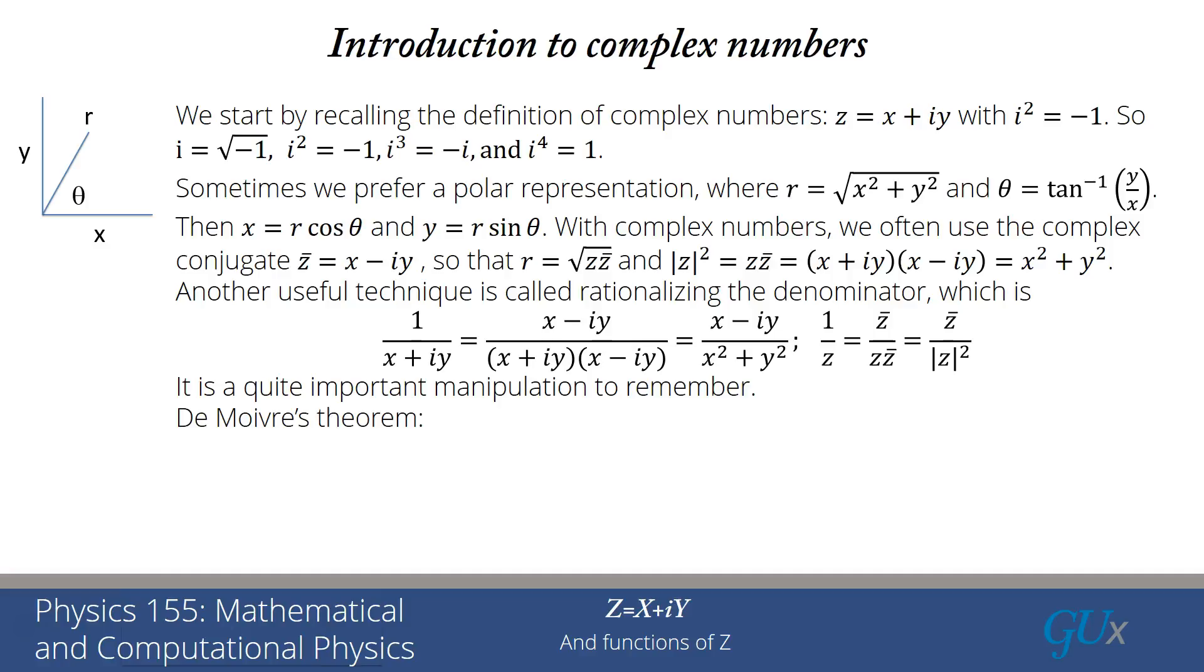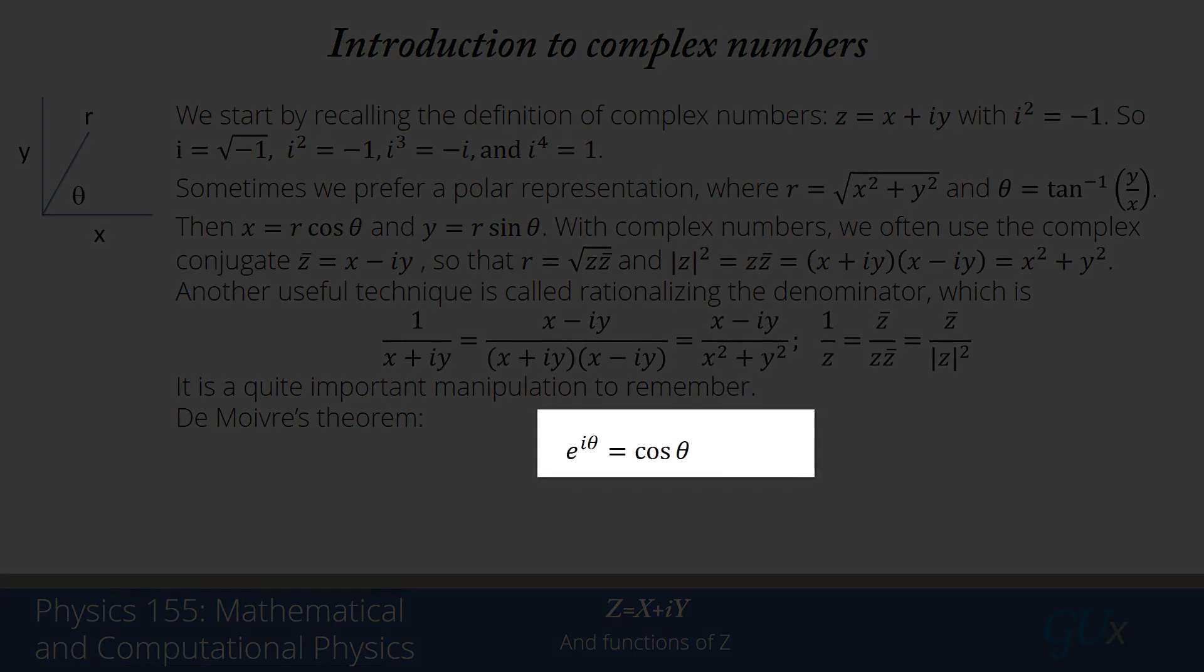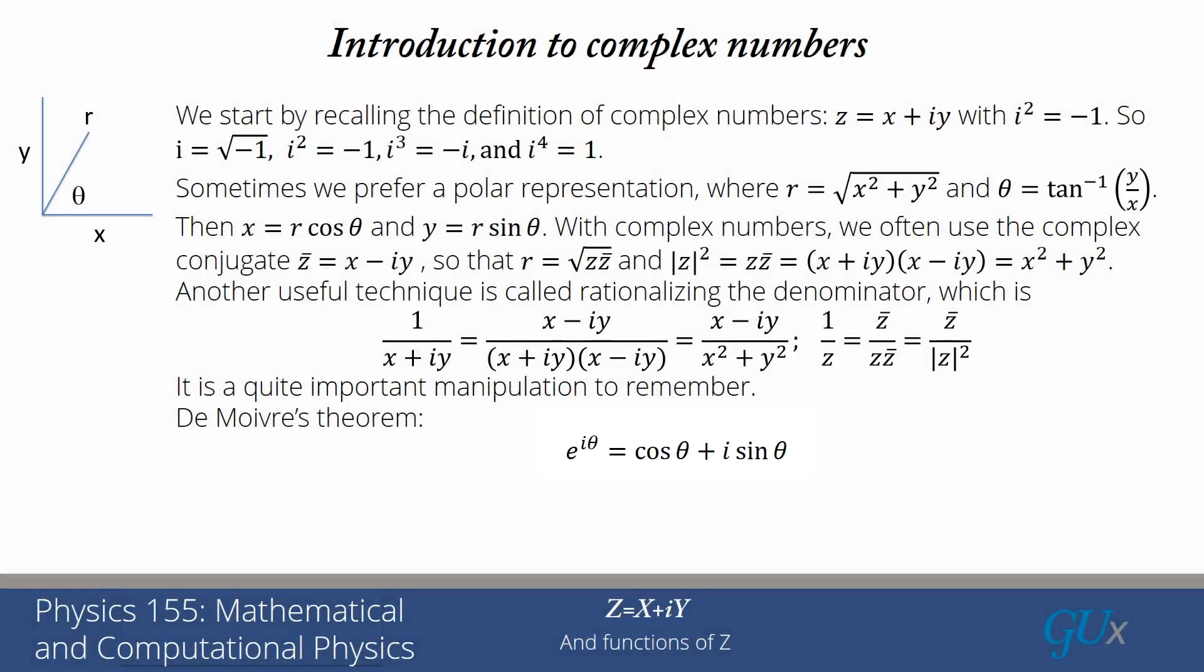Now we're going to work on DeMoivre's Theorem, which helps us find the nth roots of unity. Part of DeMoivre's Theorem starts by looking at the expression e to the i theta, which it claims is equal to cosine theta plus i sine theta.